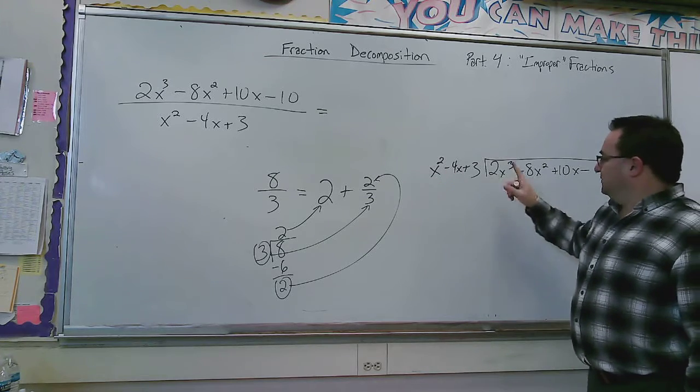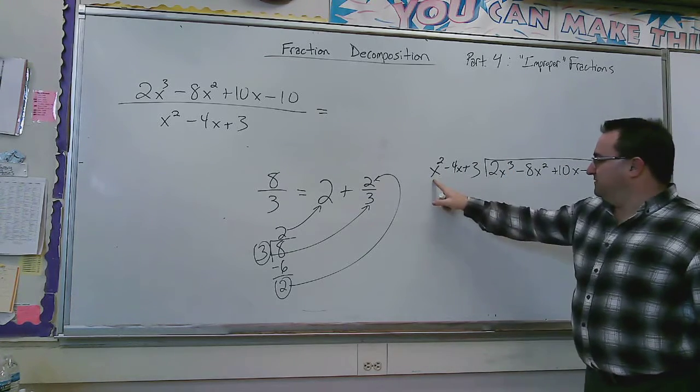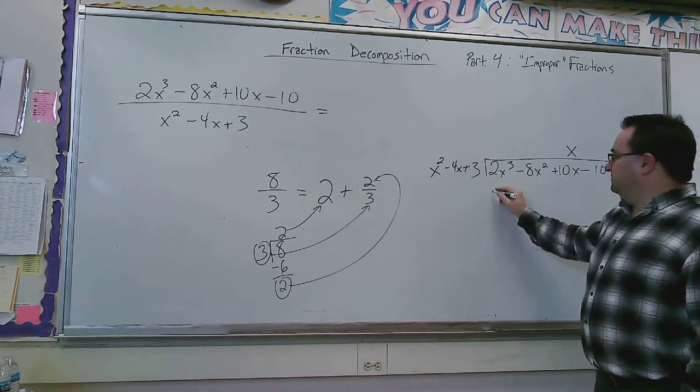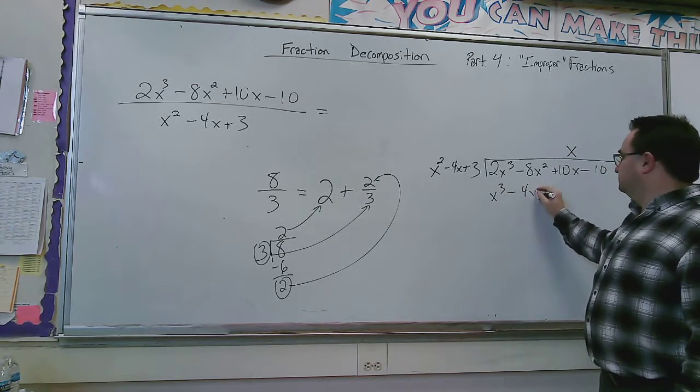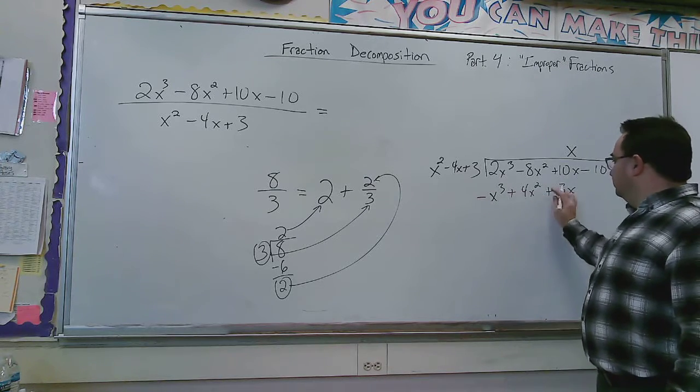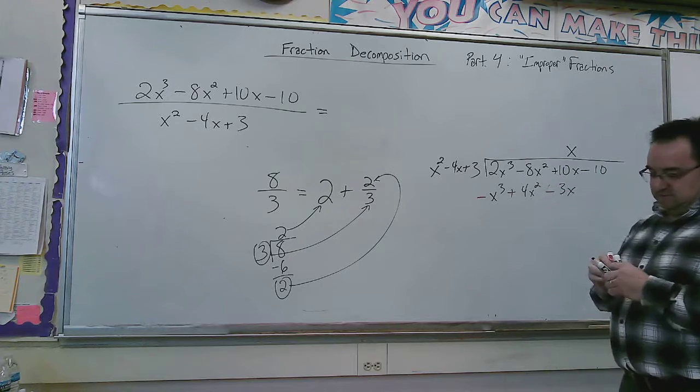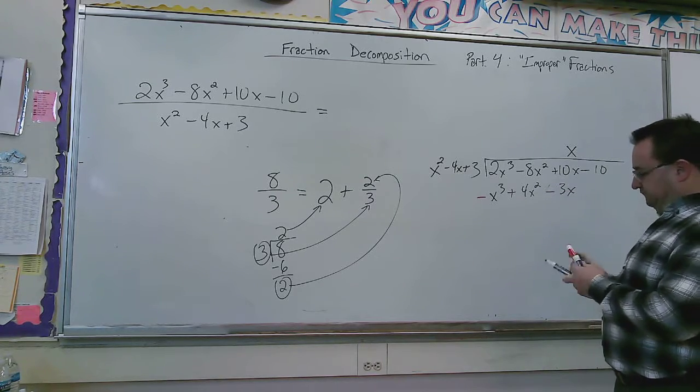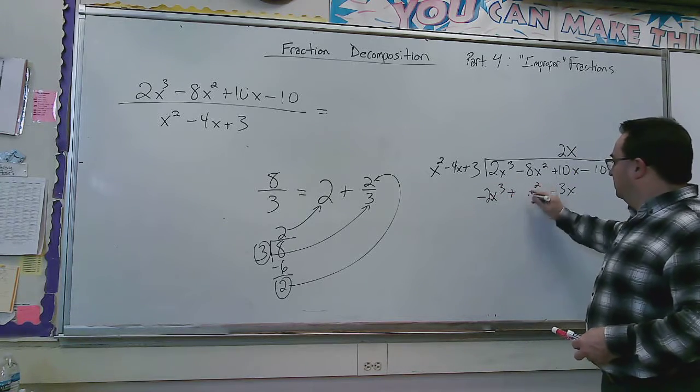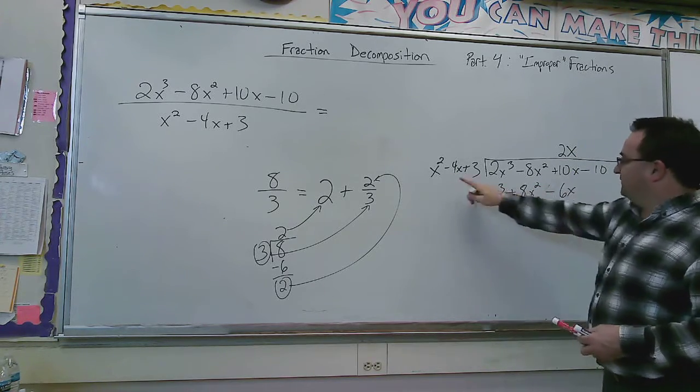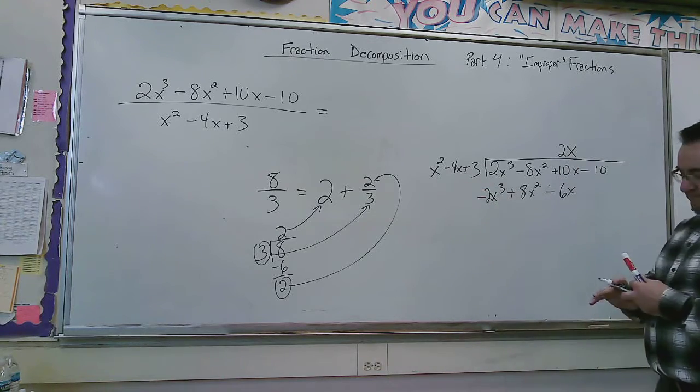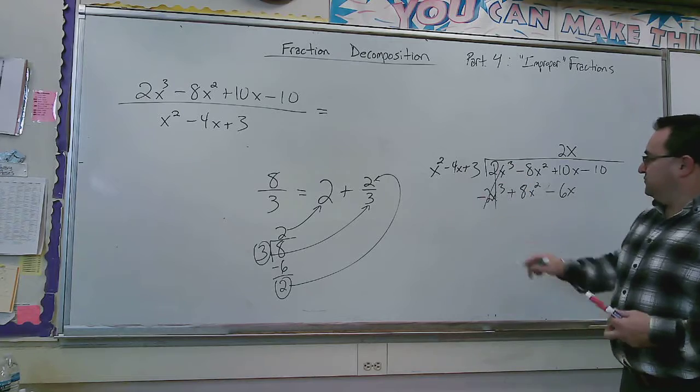How many times does x squared go into 2x cubed? Or what do I got to multiply this by to get that? X. And then I have to distribute. And then because this is what you do when you do long division, you have to switch the signs. Well it helps if I get it right. And I have to actually multiply that by 2x. And then when I distribute I get that. My apologies.